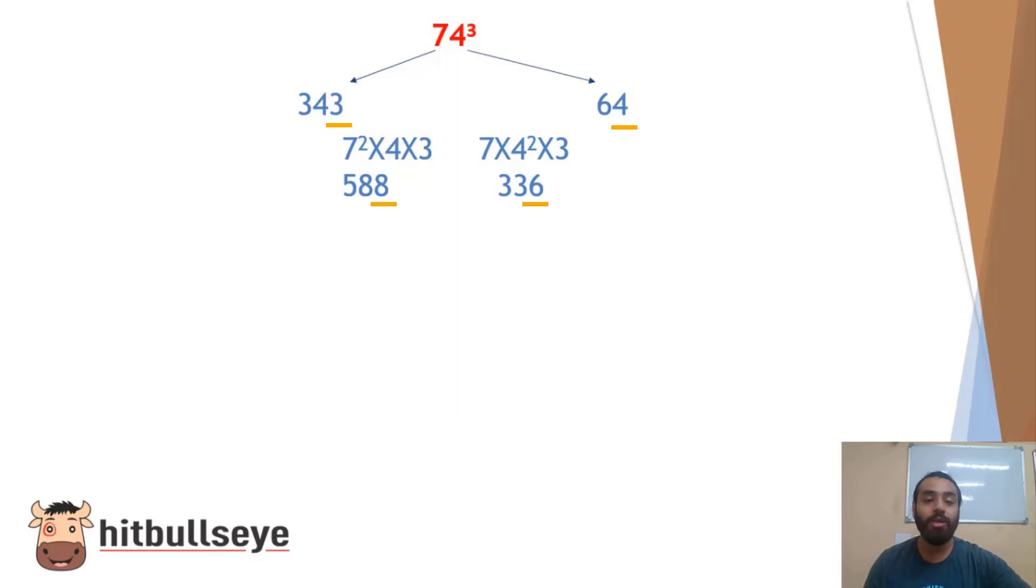Now we have to remember this pattern: we have to square the first number, and in the next part we have to square the second number. So we get to the answer as 588 and 336 as the answer for this particular expression in the middle.